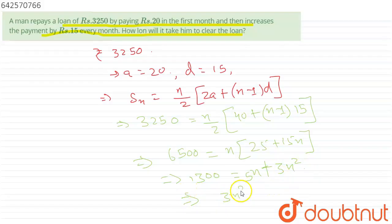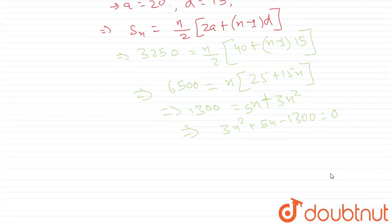Then this equation will be a quadratic in nature, and it will be 3n² + 5n - 1300 equal to 0. Now we have to factorize 5n such that its sum is equal to 5n and its product is equal to 3900, that is 1300 into 3.